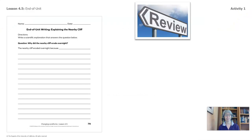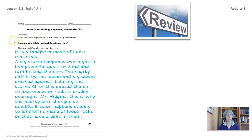Let's review what has been written. Someone has submitted this writing sample. So the question we were answering is: why did the nearby cliff erode overnight? The nearby cliff eroded overnight because it is a landform made of loose materials. A big storm happened overnight — it had powerful gusts of wind and rain hitting the cliff. The nearby cliff is by the ocean, and big waves crashed against it during the storm. All of this caused the cliff to lose pieces of rock. It eroded overnight.